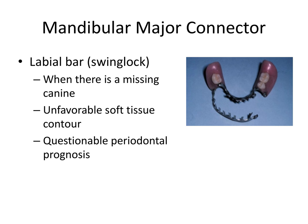Lastly we have the labial bar, sometimes called the swing lock design. This is indicated when there's a missing canine, unfavorable soft tissue contour, or questionable periodontal prognosis. Instead of a lingual bar, there's a labial bar, and the modified design has a hinge on one end and a locking mechanism at the other — hence why it's called the swing lock.